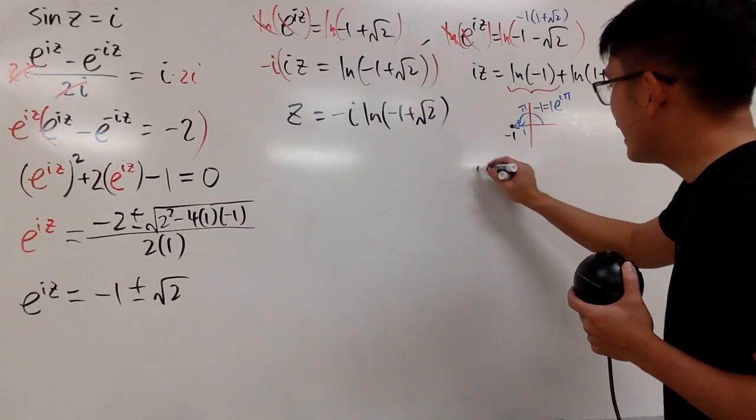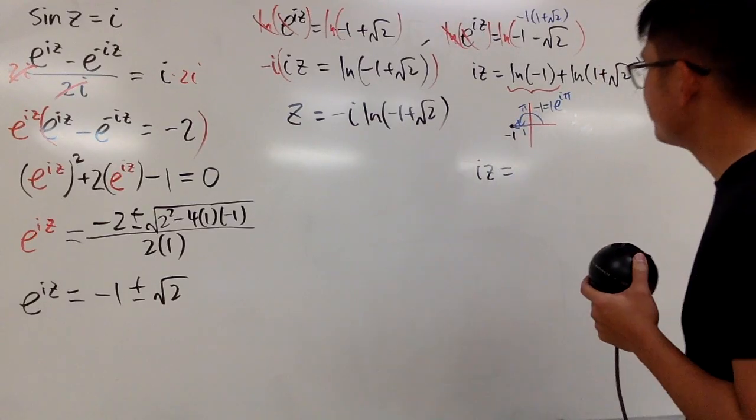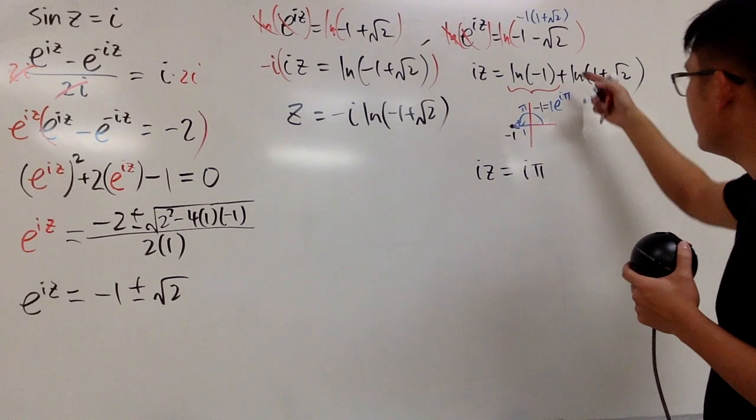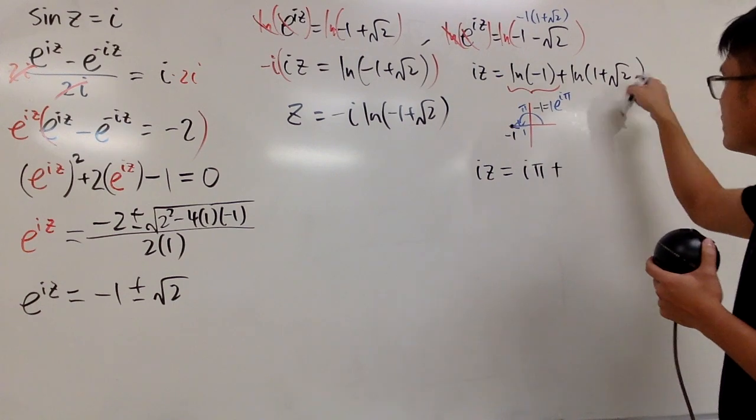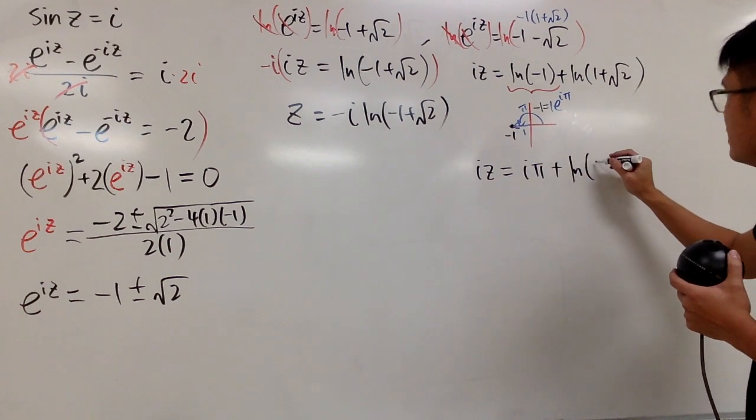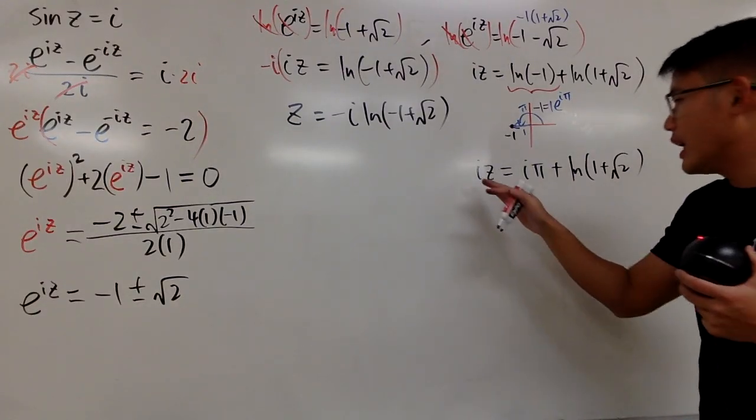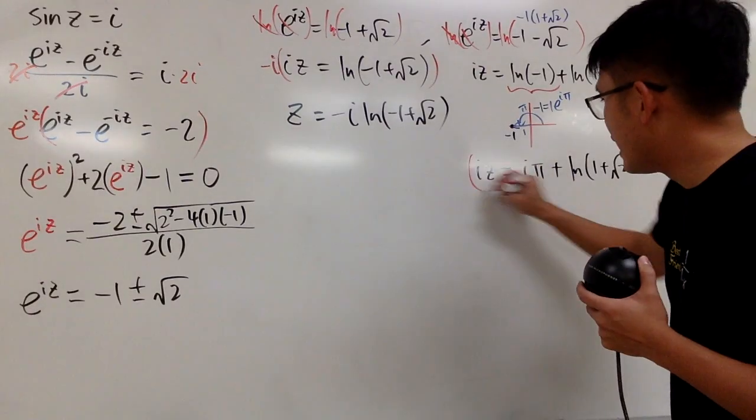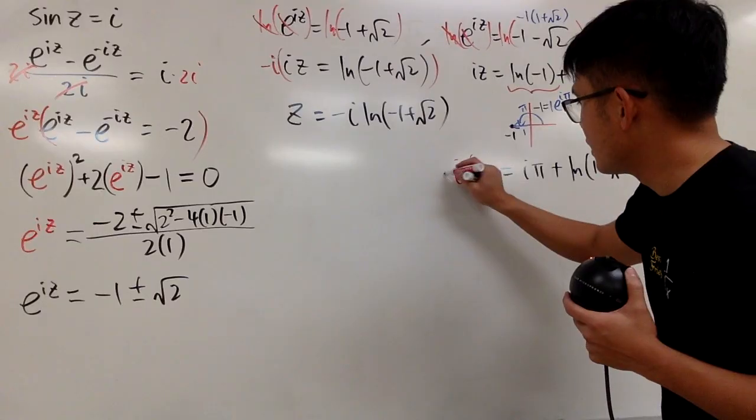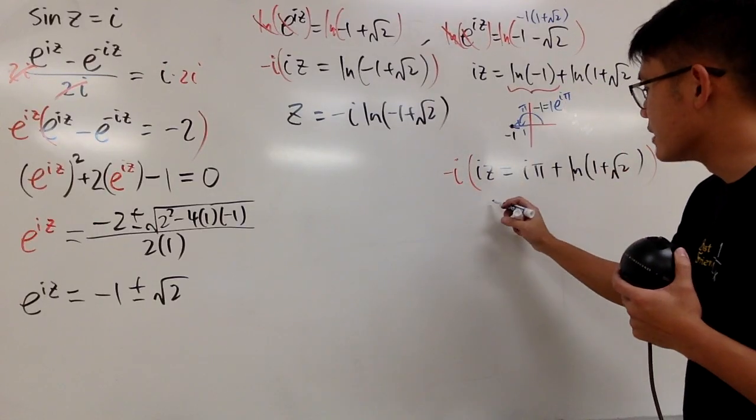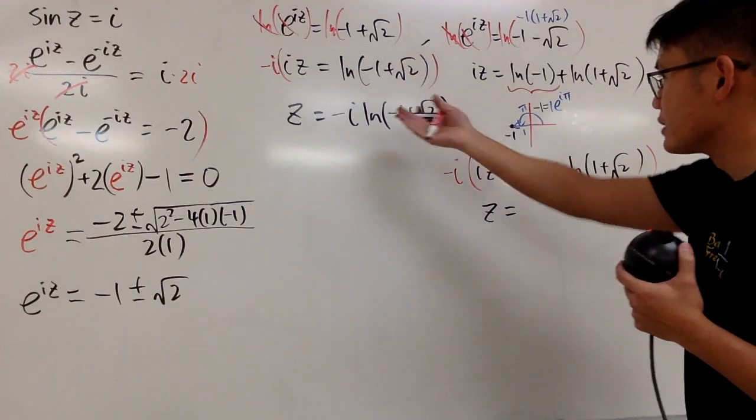Anyway, we get iz equals, as I said, this right here will just give us i pi, and then we have this. And now this is positive, so we know this is a legitimate logarithm. So, this is good. And once again, I'm not going to divide everything by i. I don't like i to be on the bottom, so I'll just save some time. Let's multiply everything by negative i. This is going to give us positive z by itself, just like that.